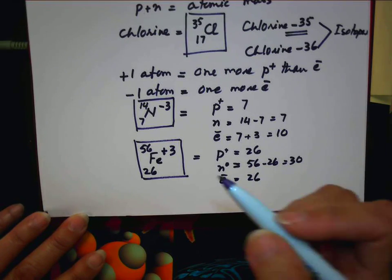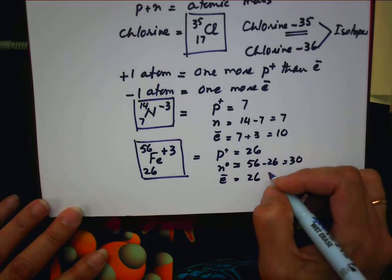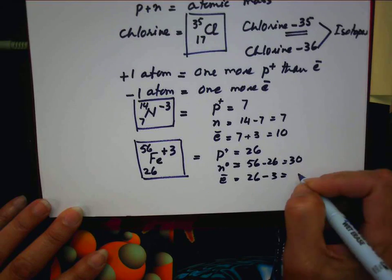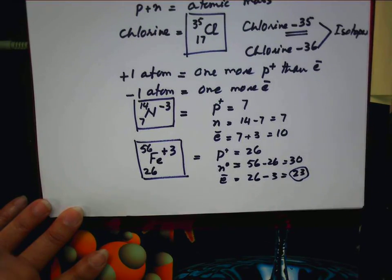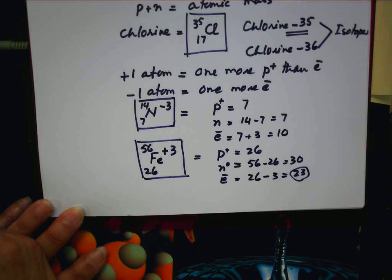Three less electron than proton, so you have to minus three here. So twenty-three. Make sense? Very easy. Very easy.